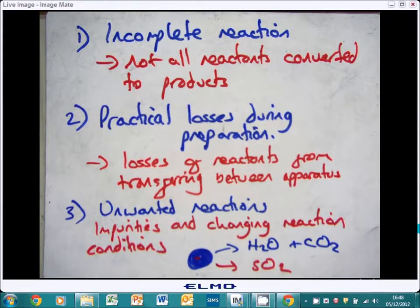And then finally, unwanted reactions. Having impurities in your reactants. So for example, if you're burning a fossil fuel, like oil, there might be a sulphur impurity in there. It might not just be a hydrocarbon. So when it burns and reacts with oxygen, you might get water and carbon dioxide, which are your expected products. But you may also get sulphur dioxide, which would be an impurity. Which would then lower your percentage yield.